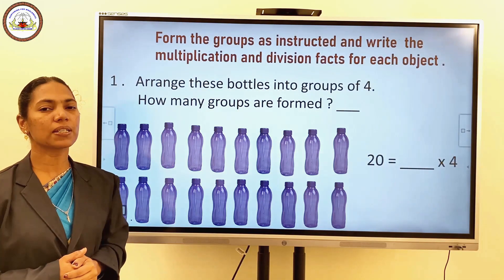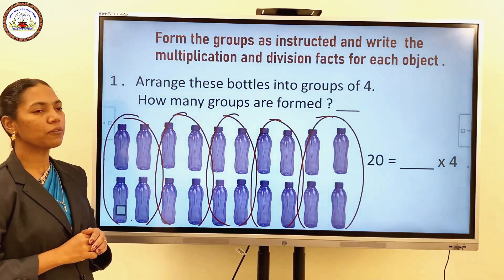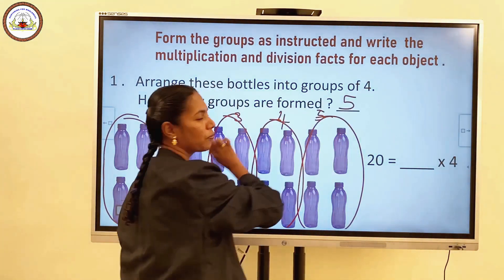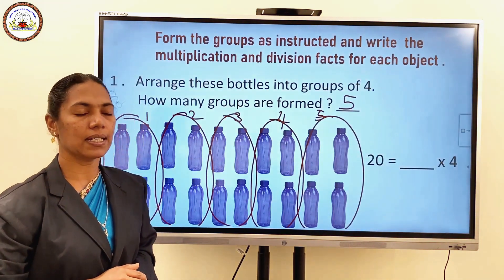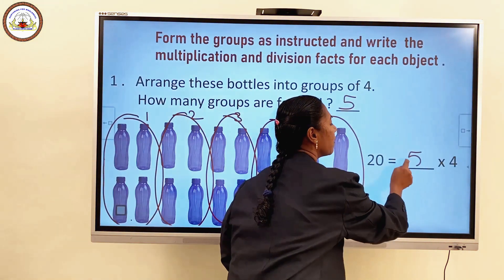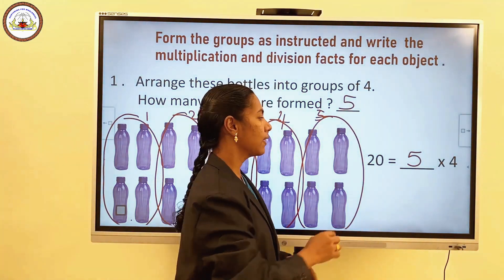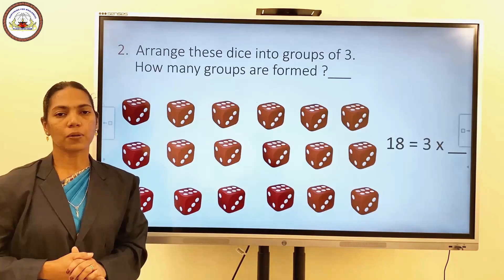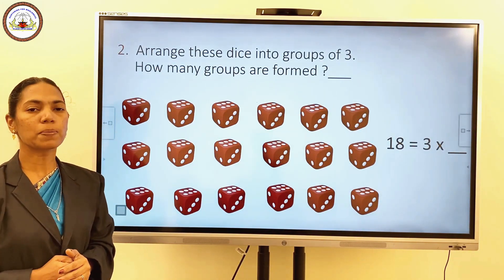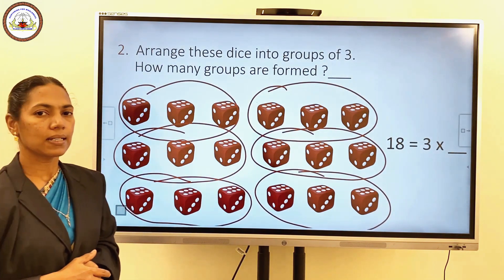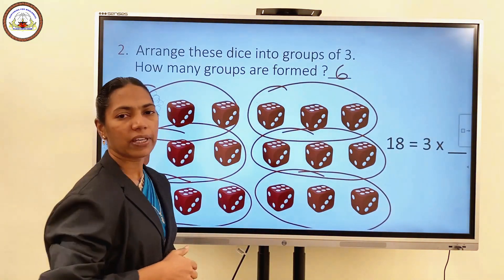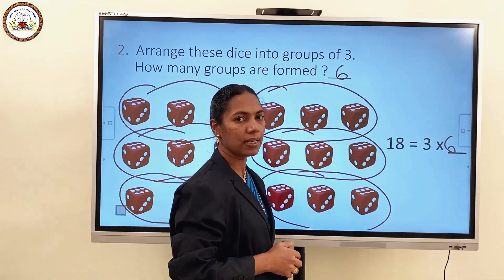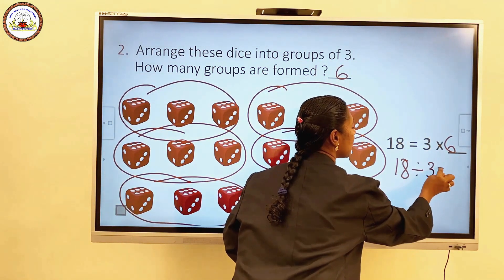Now the first question: arrange these marbles into groups of 4. How many groups are formed? 1, 2, 3, 4, 5 — so we can write 5 here. The corresponding multiplication fact is 20 equals 5 into 4, and the division fact is 20 divided by 4 is equal to 5. Second question: arrange these into groups of 3. How many groups are formed? 6 groups. So 18 equals 3 into 6, and the division fact is 18 divided by 3 is equal to 6.